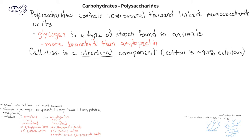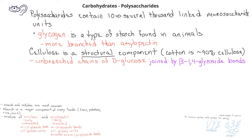Like amylose, cellulose is composed of unbranched chains of D-glucose units. However, one of the key differences between cellulose and amylose is that in cellulose, the glucose units are joined by beta-1,4 glycoside bonds, rather than the alpha-1,4 glycoside bonds found in amylose.